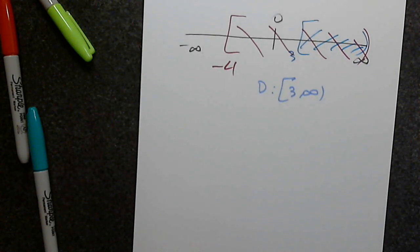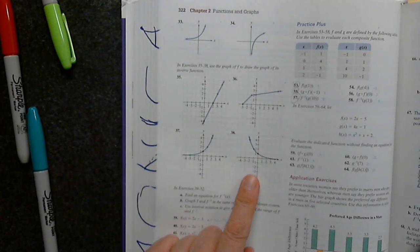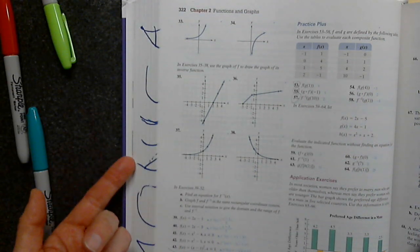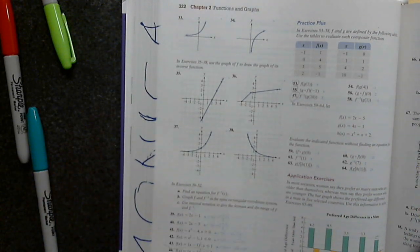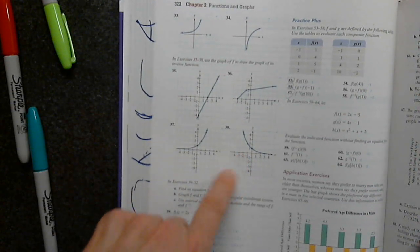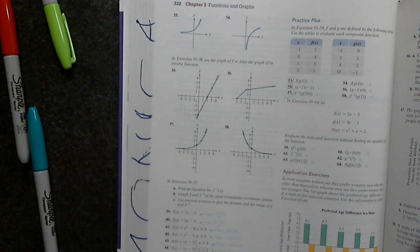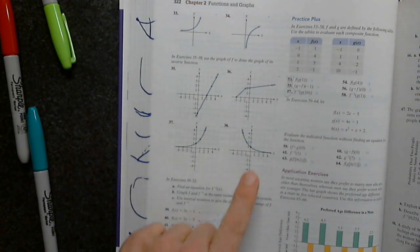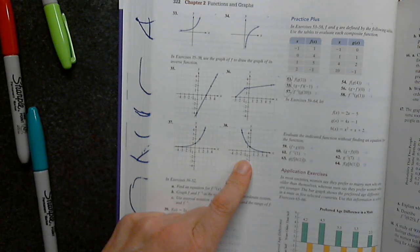This is what we didn't get the chance to do last time. Problem 38 on page 322: we're given a graph. First, is it a function? Yes, by the vertical line test. Is this function one-to-one? Yes, by the horizontal line test.